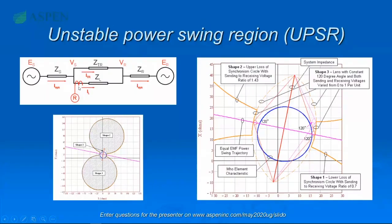When you click on that line, the relay is protecting that line and the program will know you're plotting the PRC-26 UPSR region for the line. It's smart enough to ignore the TAP. I purposely chose this example to show that if you have a generator locally, PRC-26 also has a separate set of calculations for generator protection. If you know this relay is supposed to be protecting the generator, you should select the generator option on the dialog box — the result will look slightly different. For line protection relay, select line; for generator protection, select generator.